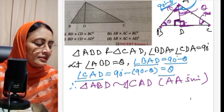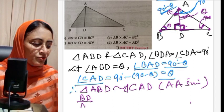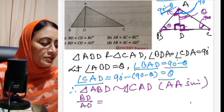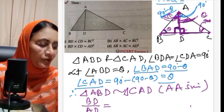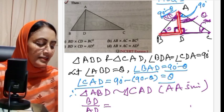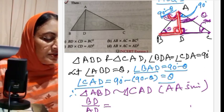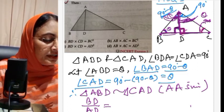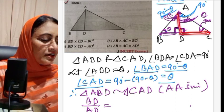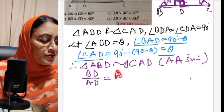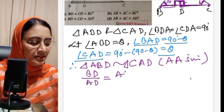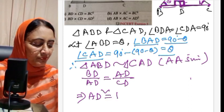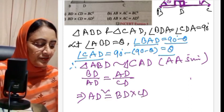By AA similarity criteria, triangle ABD is similar to triangle CAD. Therefore, BD by AD equals AD by CD — since BD corresponds to the side opposite theta, and AD is adjacent. So BD by AD equals AD by CD, which implies AD squared equals BD into CD.